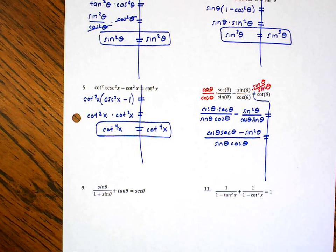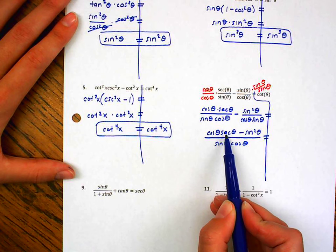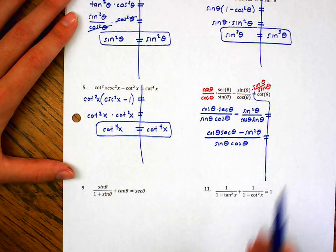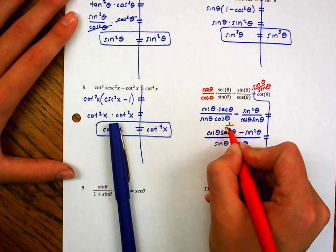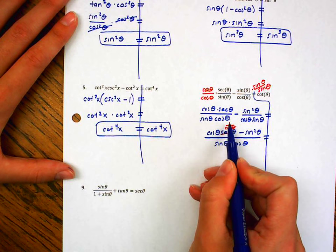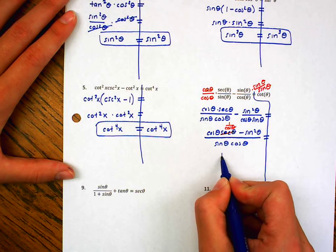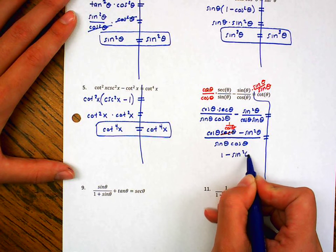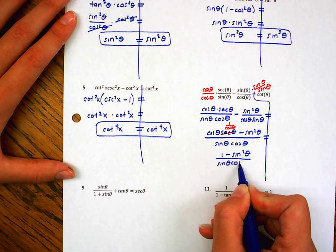Hmm, when I look at this, I notice that secant is the reciprocal of cosine, or in other words, secant is the same as 1 over cosine theta. So if I have cosine theta times 1 over cosine theta, those are going to cancel out. So if I rewrite this, I really have 1 minus sine squared theta over sine theta cosine theta.